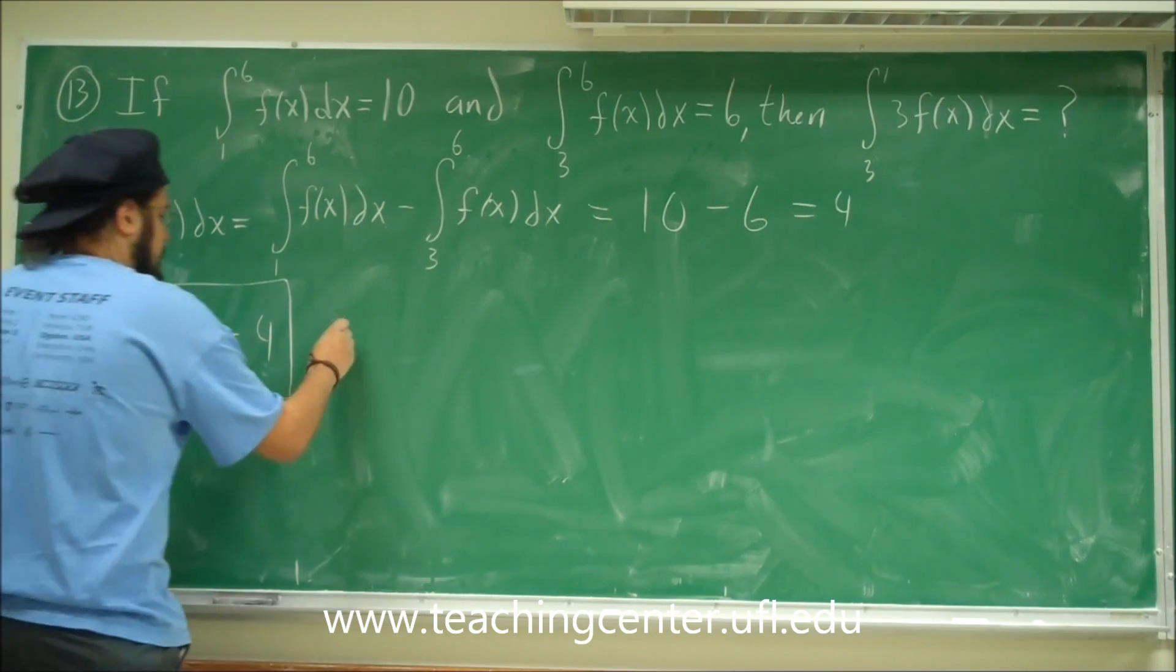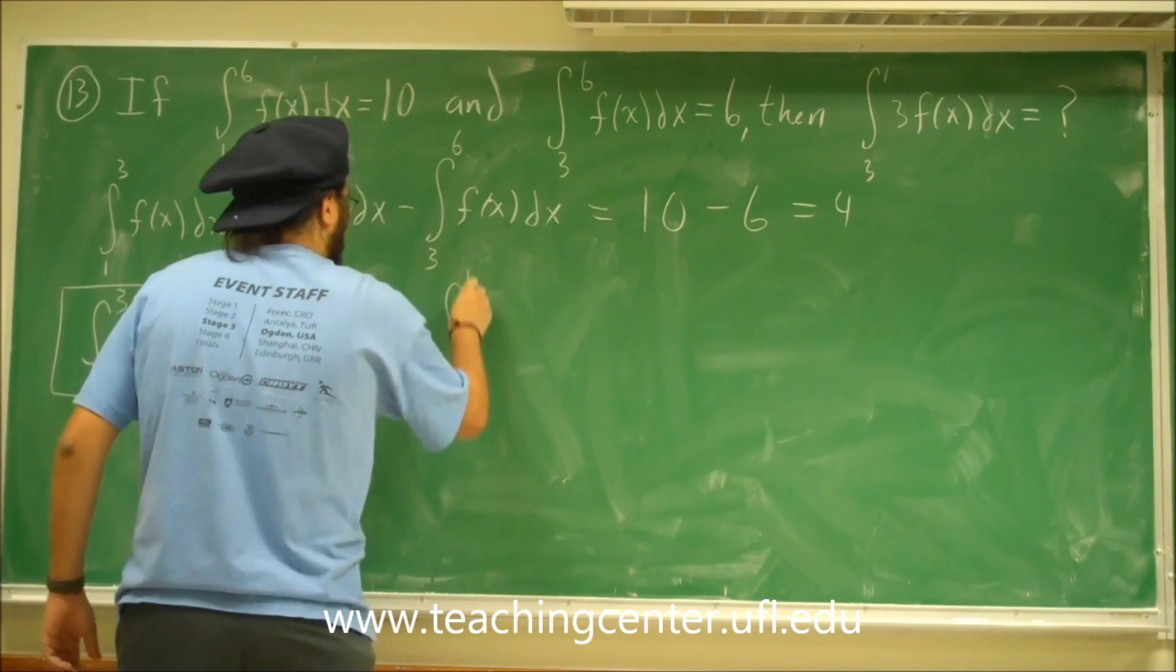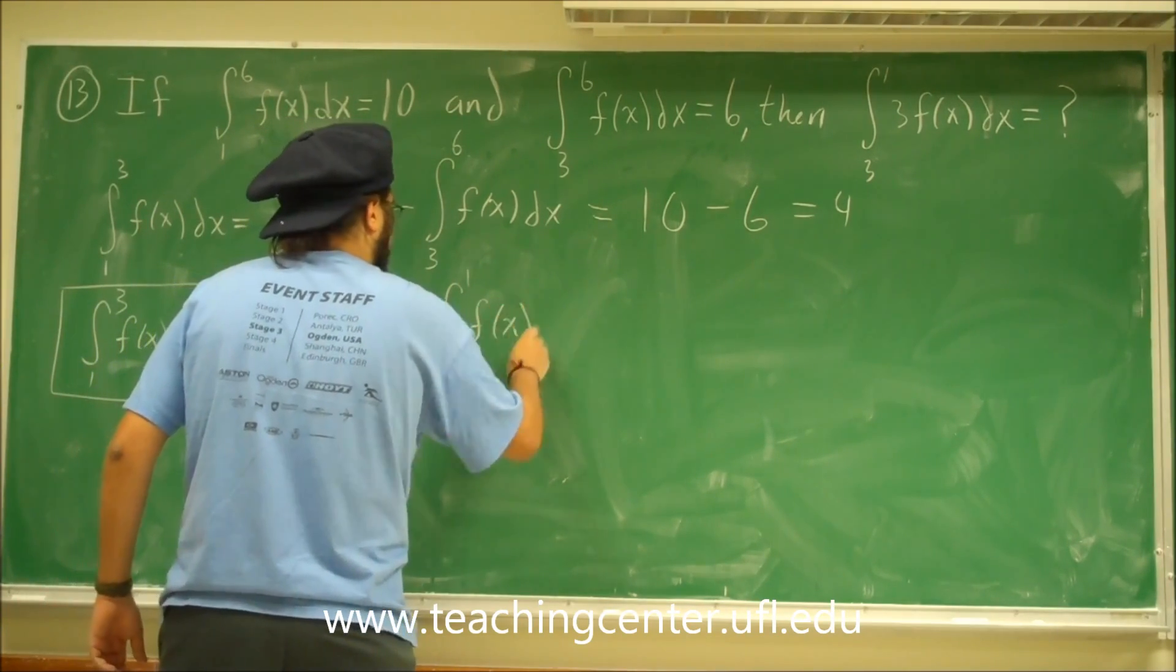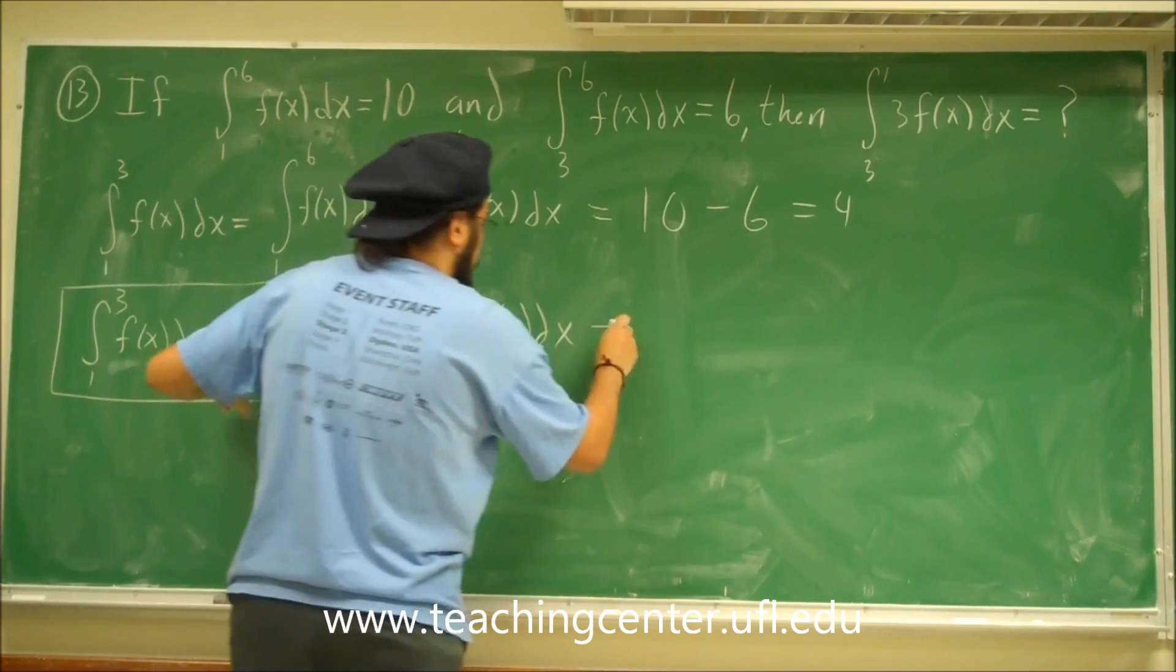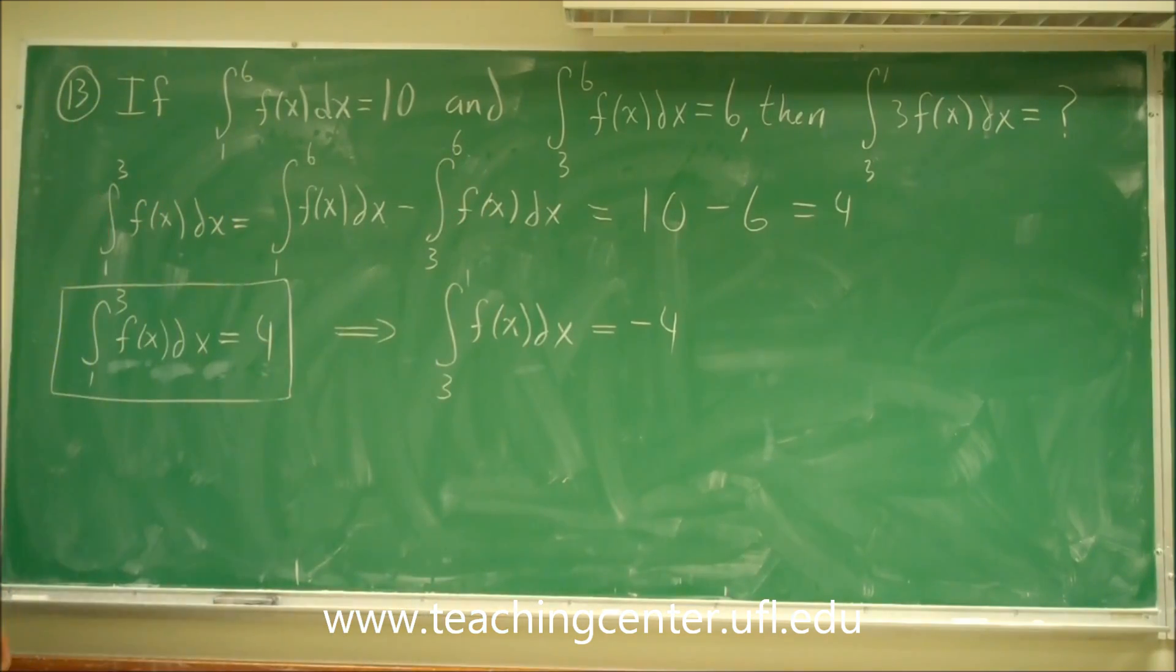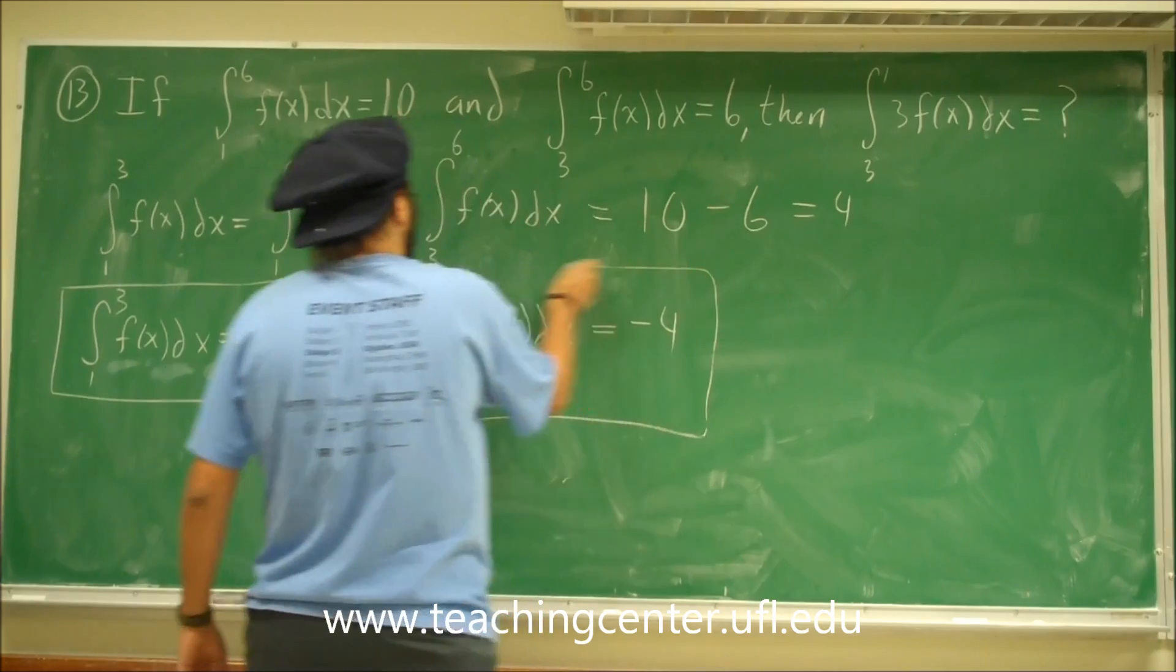So therefore, this then implies that the integral from 3 to 1 of f of x dx is going to be the same area of 4 but negative. So negative 4. Okay, so now we have this, and now we're almost done.